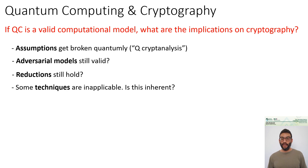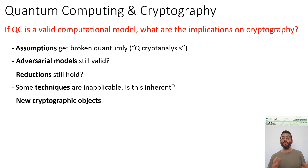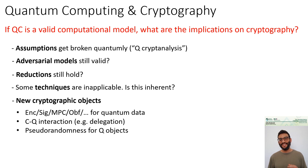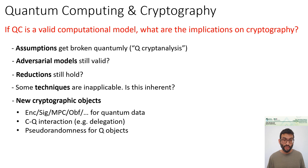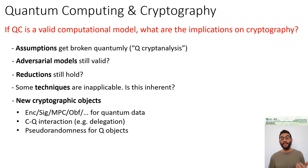Beyond post-quantum security, quantum computing can influence cryptography through entirely new cryptographic objects. First, we can think about extending classical primitives into the quantum world. We know how to encrypt messages — but how about encrypting quantum messages? We know how to sign messages — can we sign quantum messages? Secure multiparty computation, obfuscation, and so on — we can try to think about quantum extensions of all these.